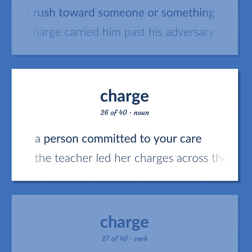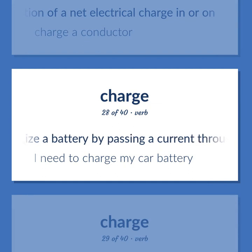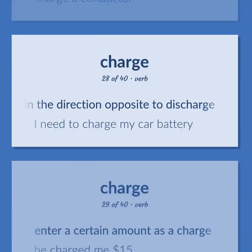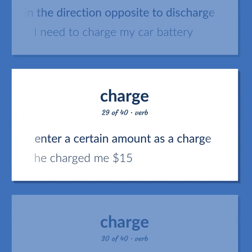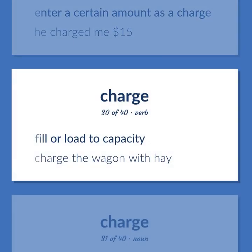Charge: a person committed to your care. Example: the teacher led her charges across the street. Cause formation of a net electrical charge in or on — charge a conductor. Energize a battery by passing a current through it in the direction opposite to discharge. Example: I need to charge my car battery. Enter a certain amount as a charge. Example: he charged me $15. Fill or load to capacity. Example: charge the wagon with hay.